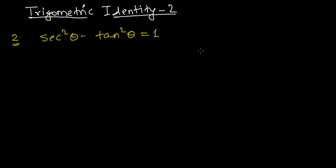Hi friends! In this video we are going to learn about the trigonometric identity, the second identity: sec²θ - tan²θ = 1.